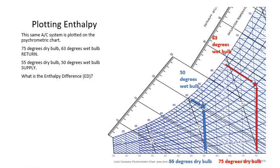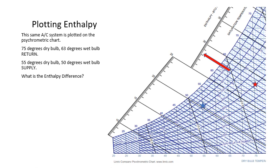Now let's try to plot our enthalpy. The enthalpy is just an extension of the wet bulb line, which runs diagonal on our chart. If we plot this out, we arrive at 28.1 BTUs per pound of return enthalpy. On our supply side, we just extend that wet bulb line up diagonally to the upper left, and we arrive at 20.3 BTUs per pound of supply enthalpy. So, how much enthalpy did this system remove? The difference between these two lines is 7.8 BTUs per pound.